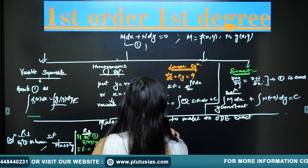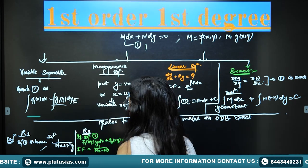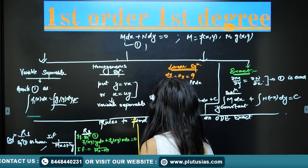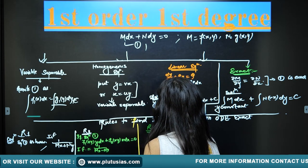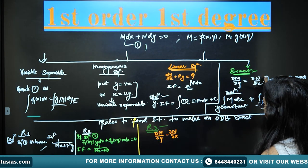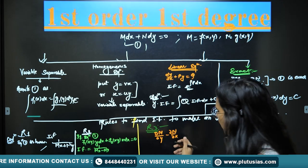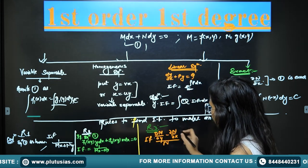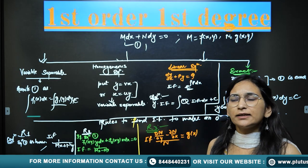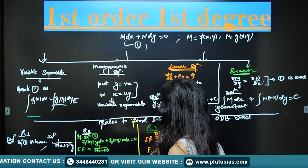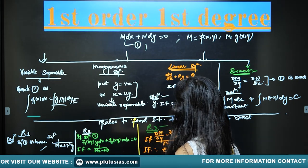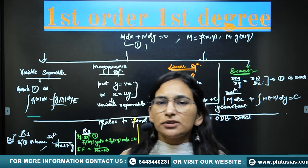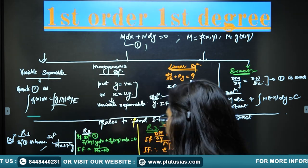Rule 3: compute (∂M/∂y − ∂N/∂x) and divide by N. These values relate to the exactness condition. If after this division you get a function of x only, call it g(x), then the integrating factor is e raised to the power of ∫g(x) dx. Multiply the given equation by this integrating factor and solve.